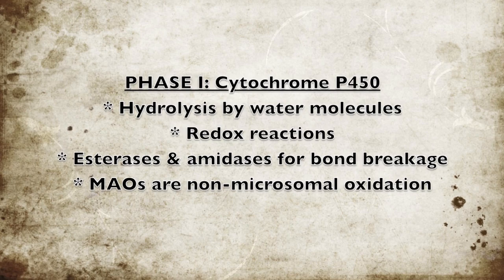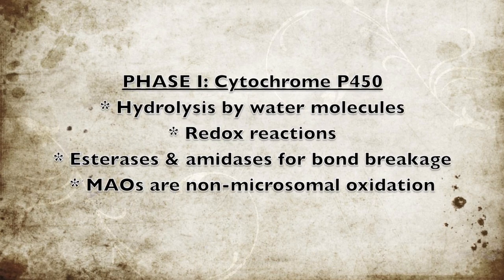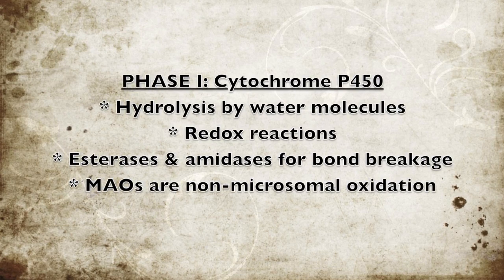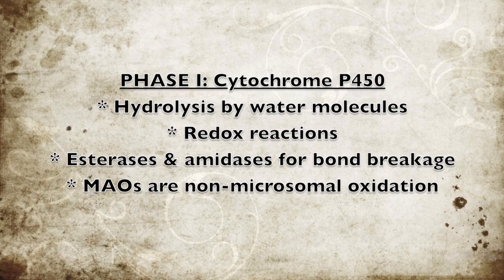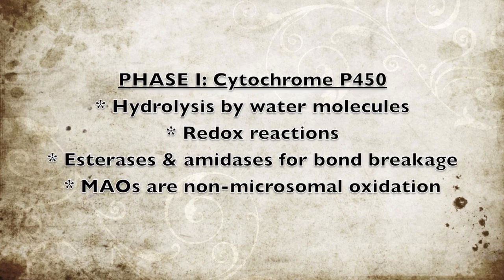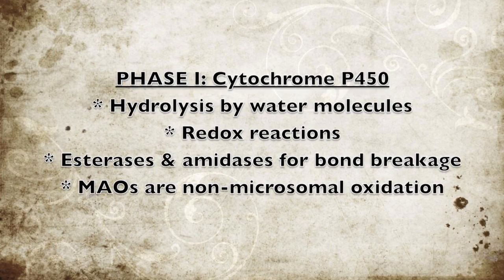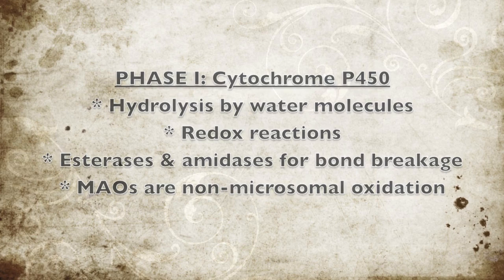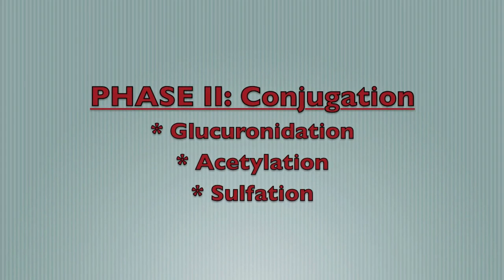Phase one modifies by cytochrome P450. Let it come to you, don't just force it. Hydrolysis by water molecules is important. Esterases and amidases are form breakers. MAOs are a form of non-microsomal oxidation, and conjugation — well, that is phase two. There are four types — memorizing that, I'll leave up to you.